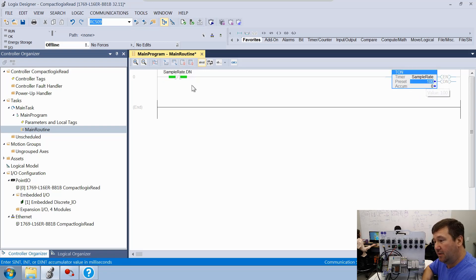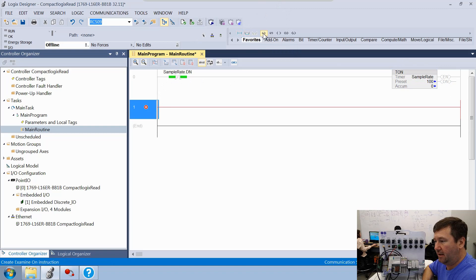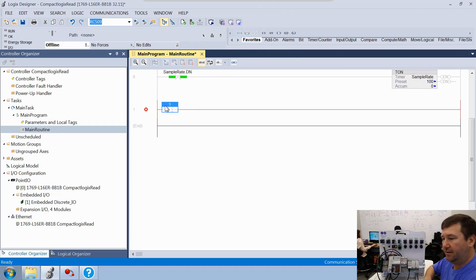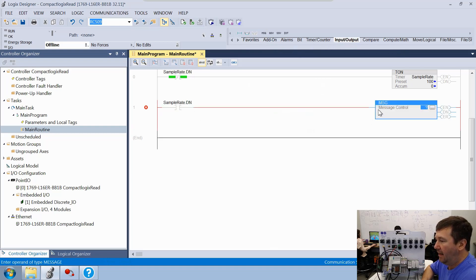What this is going to do is every 100 milliseconds, this timer is going to be done for one scan. And we're going to use that to trigger our message instruction. So we're going to add another rung and bring down an examine on instruction. We're going to look at the sample rate dot DN bit. And then we're going to use a message instruction.